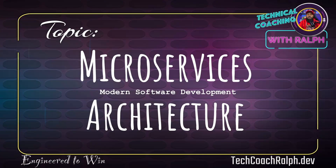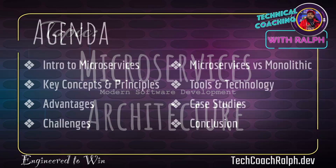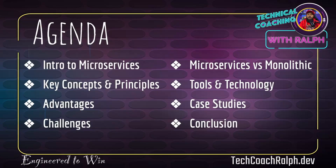So modern software development — microservices architecture. Our agenda for today: we're going to get an intro into microservices, talk about the key concepts and principles, the advantages of using microservices, the challenges of using microservices. We're going to compare microservices to a monolithic approach, then talk about the tools and technologies included in microservices, look at some case studies, and then wrap it up with our conclusion.